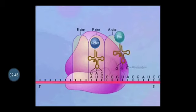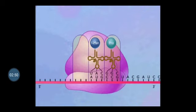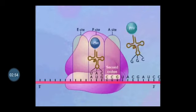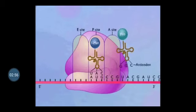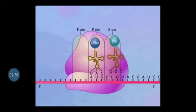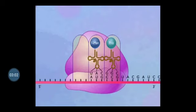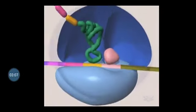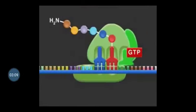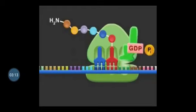This peptide bond forms in such a way that the amino acid at the P site shifts to the A site. Now the A site has two amino acids — proline and fMet — called a dipeptide. This is the step that shows how elongation actually occurs.